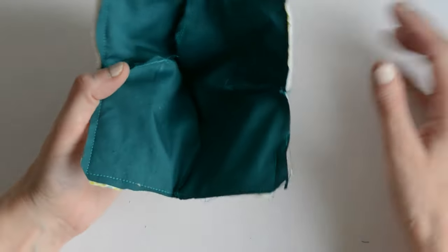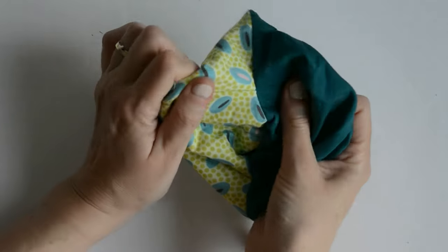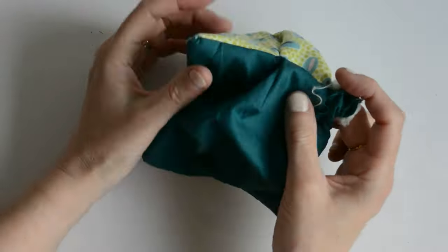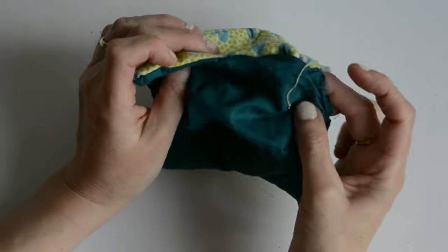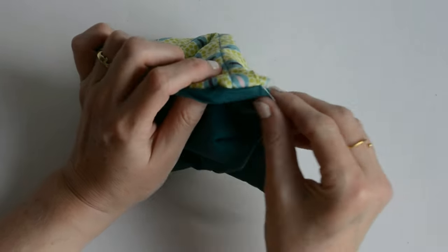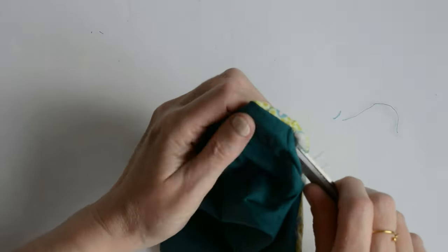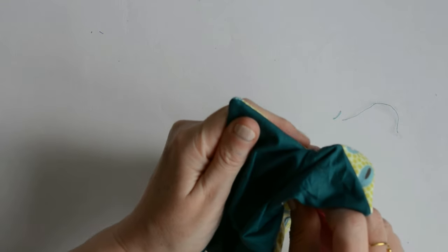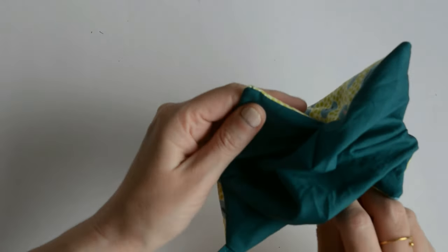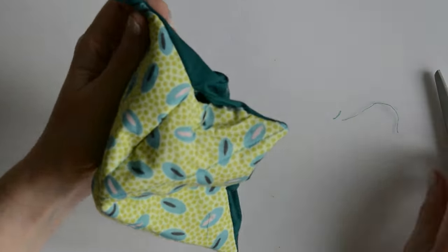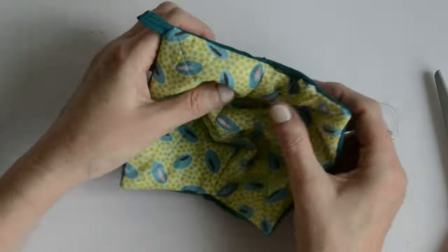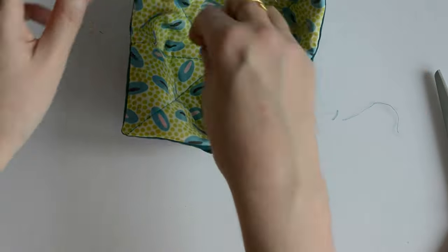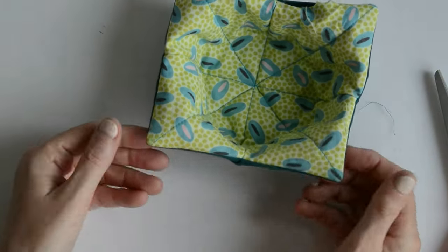And I'm just trimming the excess seam allowance. Some people put two layers of wadding padding in, but that just adds bulk and makes it a little bit harder to turn through. So I'm turning through and I'm going to push out those corner points to make it as professional as possible. So quite a lot of people use chopsticks for turning your corners out. I use this but I'm really careful. I don't want to snap any stitches by accident.